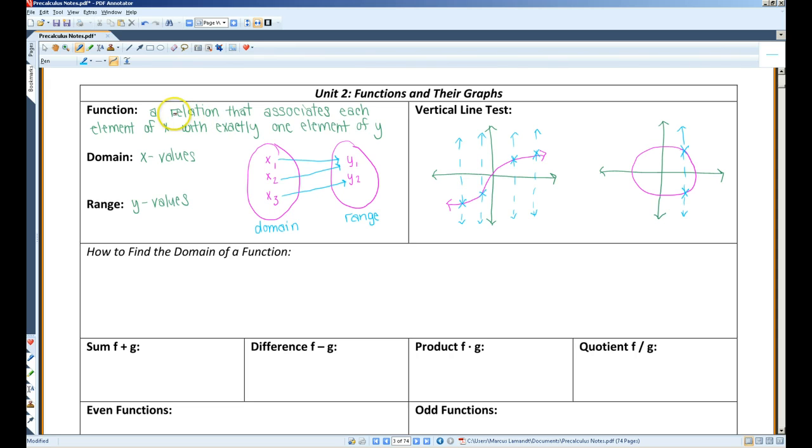Let x and y be two non-empty sets. A function from x into y is a relation that associates each element of x with exactly one element of y. And I've drawn a little diagram here. So every element in the domain is associated with an element in the range.